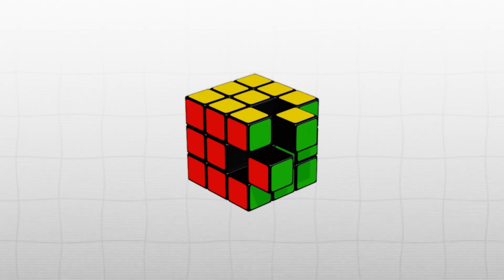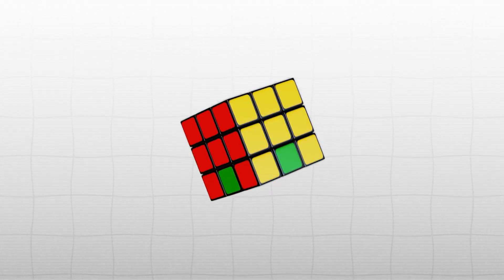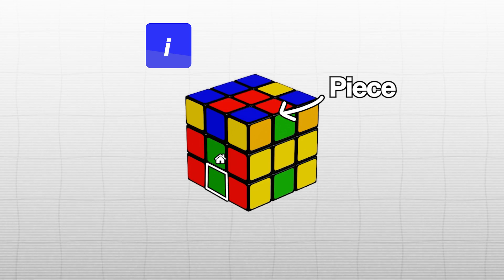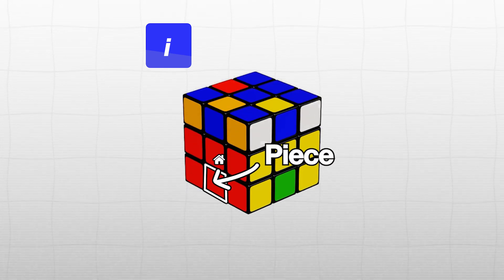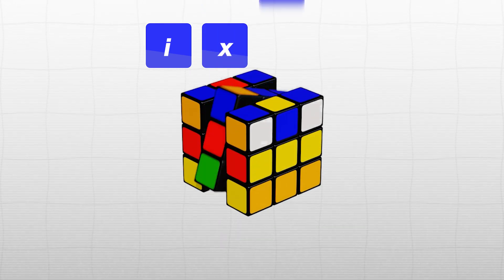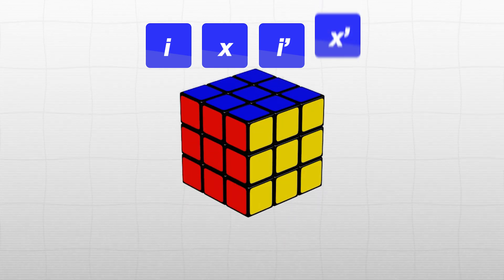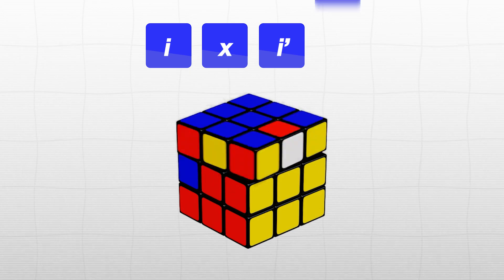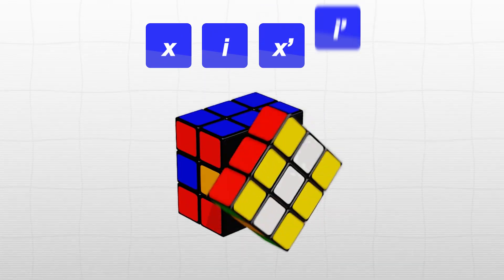And something similar can be done for flipped edges. I can do these three moves to take it out, and then these four to put it back in the correct way. Then do the exchange move and undo everything. But in practice, especially for flipped edges, fast solvers prefer doing two quicker commutators instead.